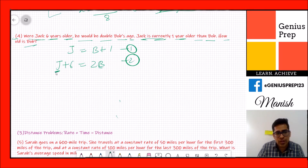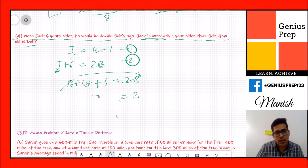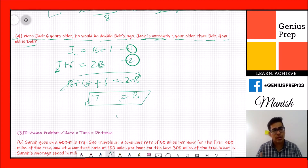We need to find b, so substitute j from the first equation into the second: (b + 1) + 6 = 2b, which gives b + 7 = 2b, so b = 7. The age of Bob is 7 years. This is how we solve age problems.